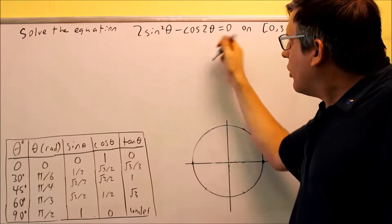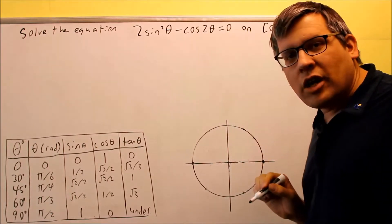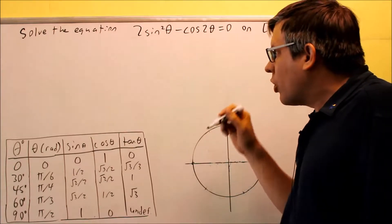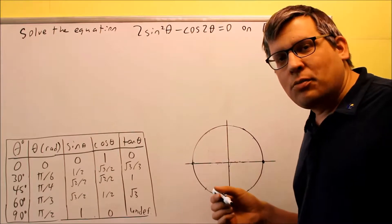Because of that, we need to find a way to get rid of this cosine 2 theta by putting in an identity. If you get to a point where we don't have anything to factor out, then you want to start looking for an identity to put in.